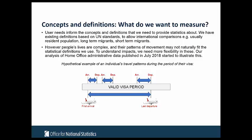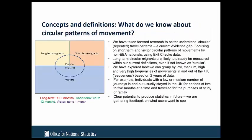Our analysis of Home Office administrative data published in July 2018 started to illustrate this. The picture shows a hypothetical example of an individual's travel patterns — where we can start using admin data to see patterns of people travelling to the UK with a visa valid for a certain period but arriving and departing within that period. In our latest research, one topic we've explored further is circular patterns of movement — repeated travel patterns where people are coming into and out of the UK on a repeated basis. This is currently an evidence gap not covered by our existing survey-based system.